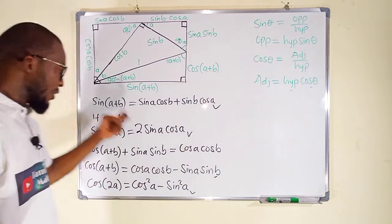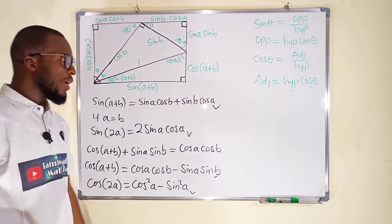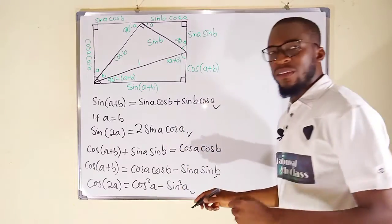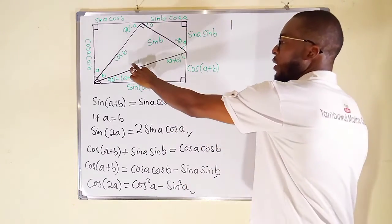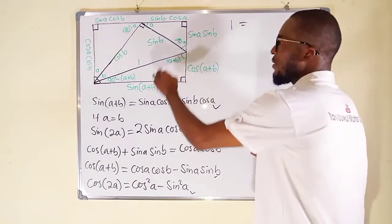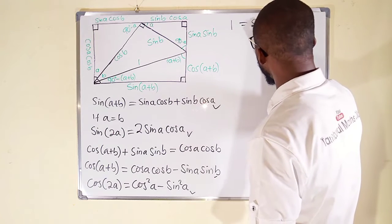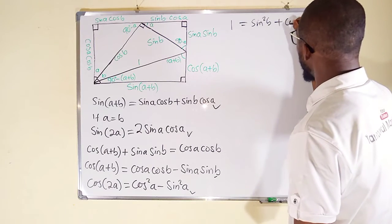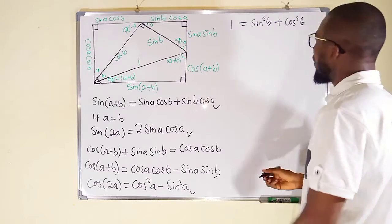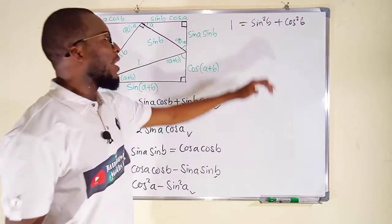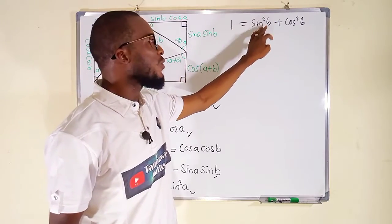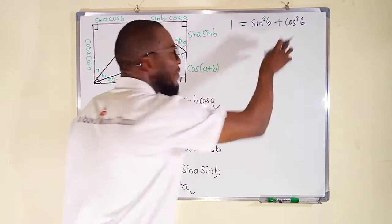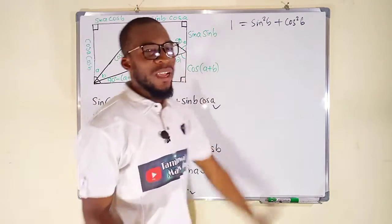We can also find identities from Pythagoras' rule. The hypotenuse squared, which is one squared, equals one. This equals opposite squared, sin²B, plus adjacent squared, cos²B. So we get the important identity: sin²B + cos²B = 1. From here we can derive other identities. Let us divide each term by sin²B.